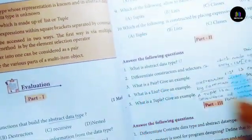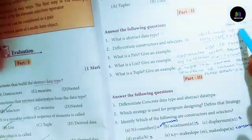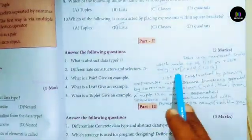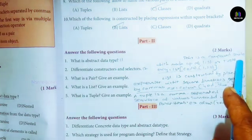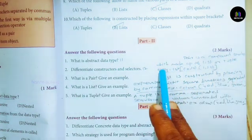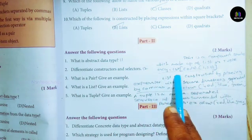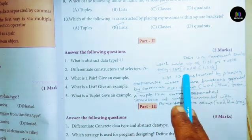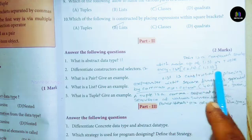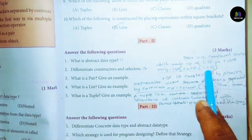What is a pair? Give an example. Answer: Pair is a compound structure which is made up of two values. Example: first (0,1,0), second (1,2,0).